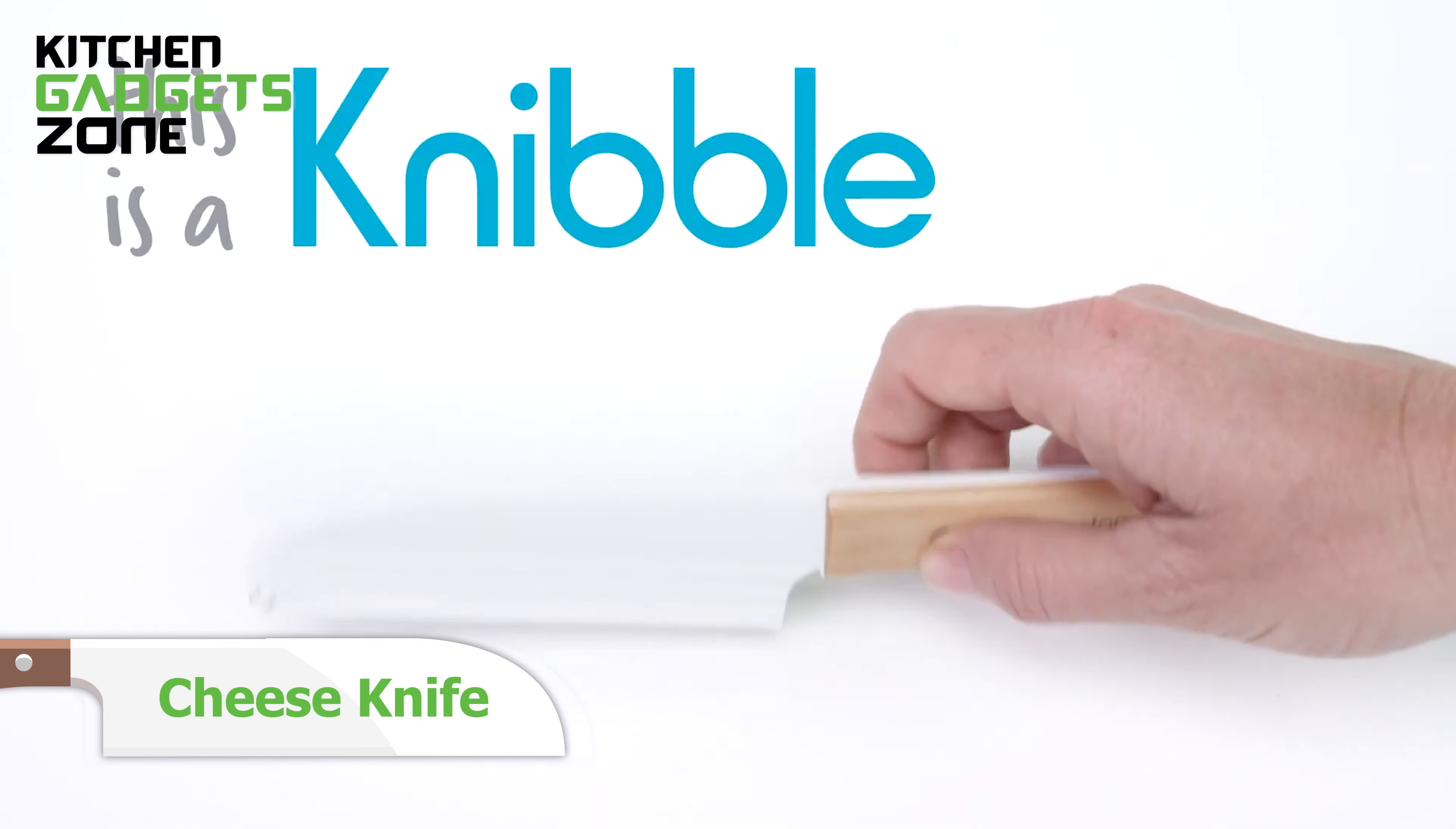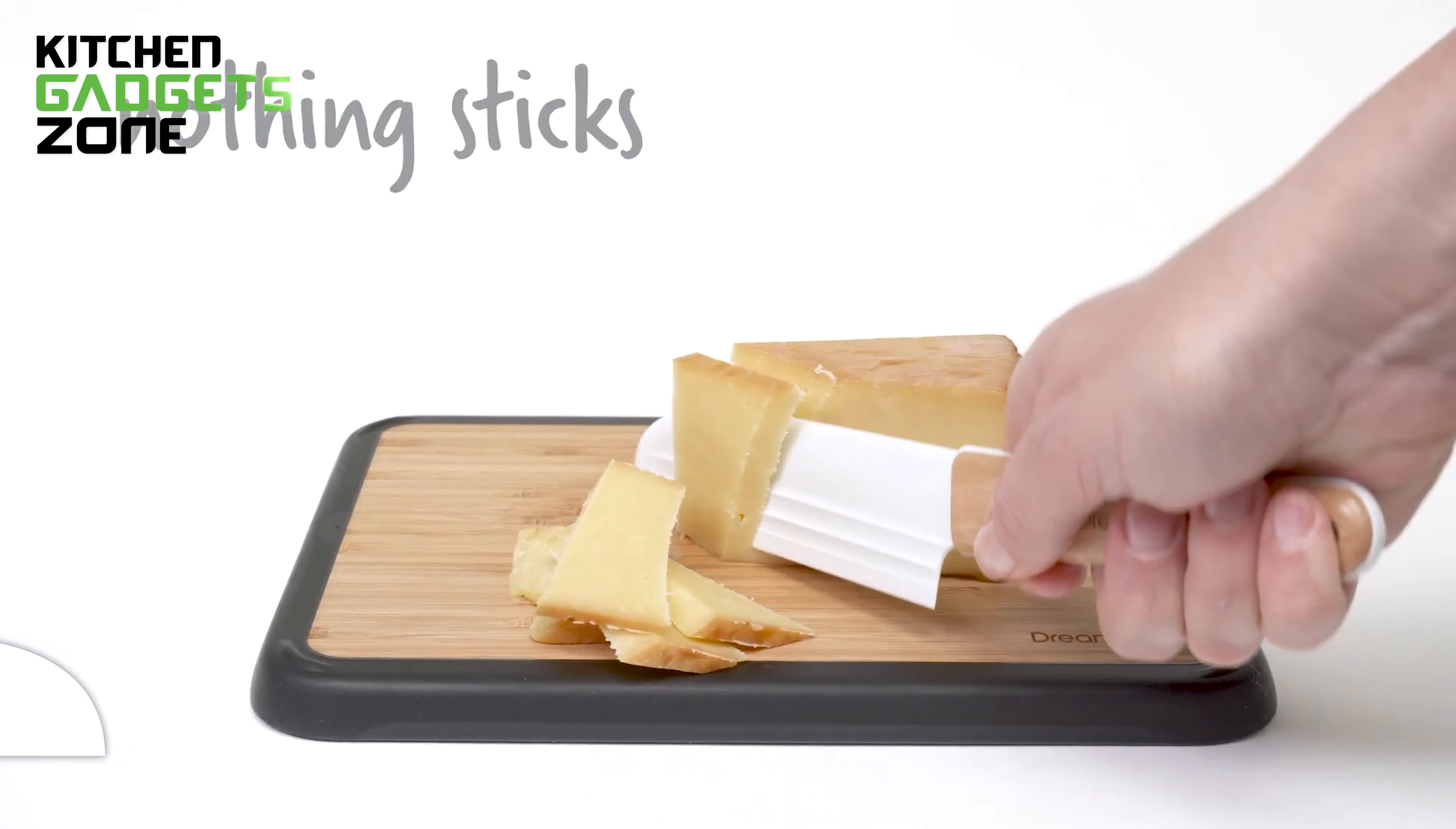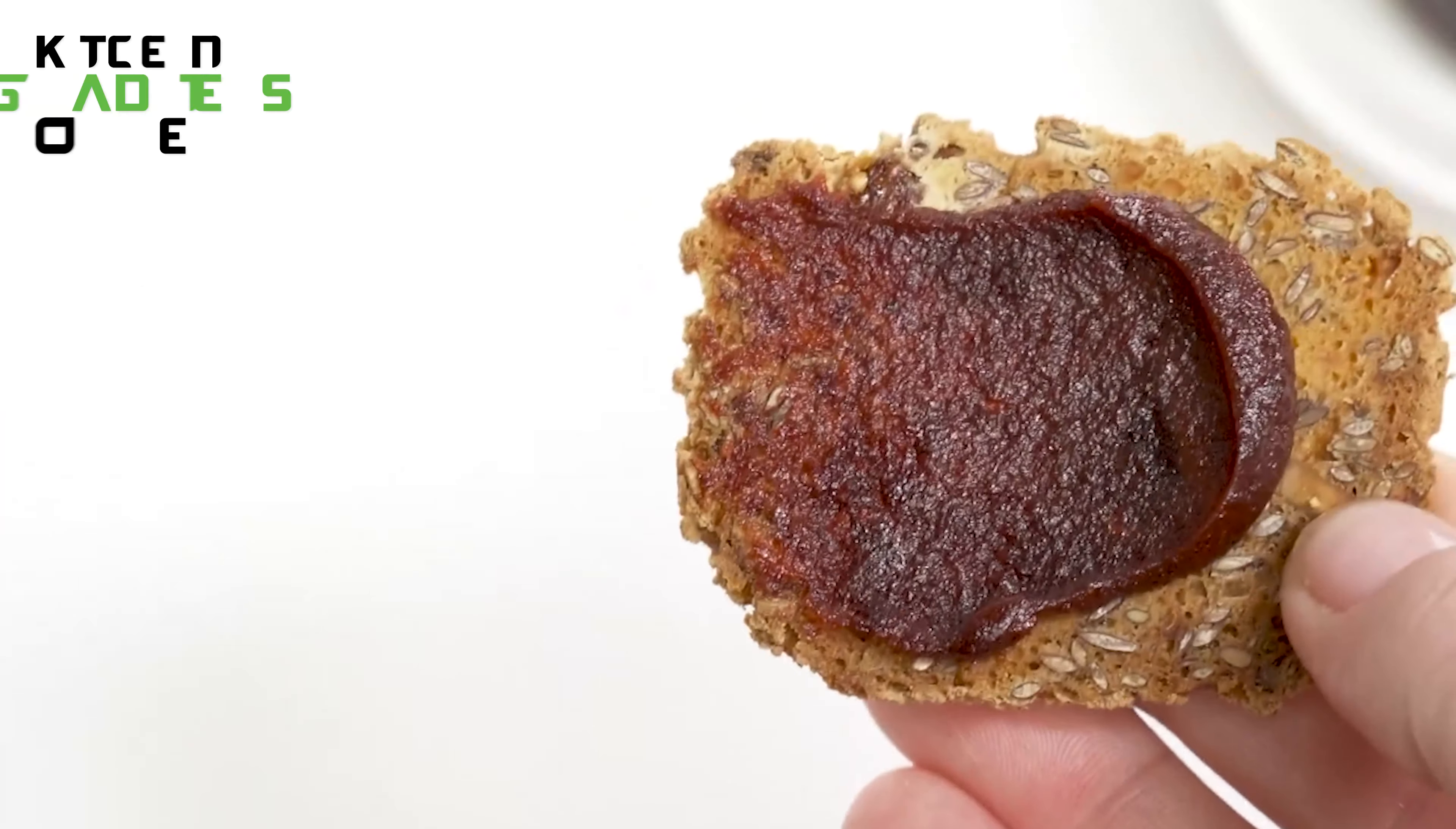Cheese lovers, rejoice! The Nibble Cheese Knife is here to make your life easier. This ingenious gadget features a unique barbed blade that creates air pockets, ensuring your cheese never sticks. The stainless steel forks are perfect for serving, and they don't extend beyond the blade for added safety.